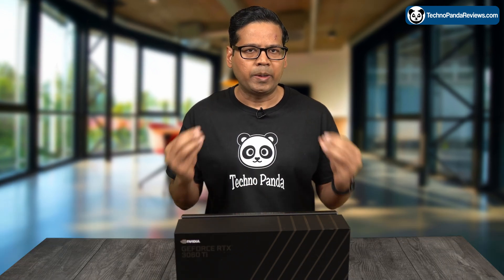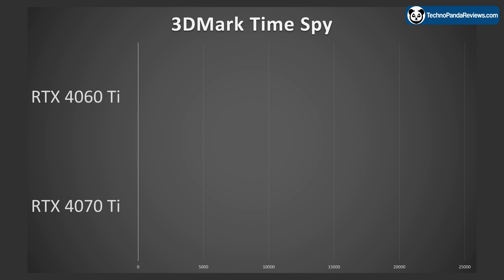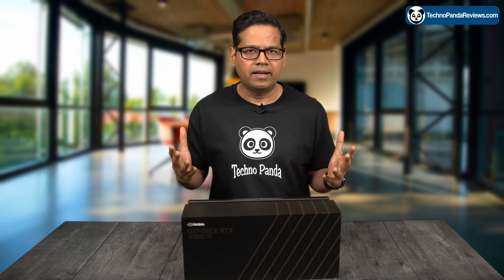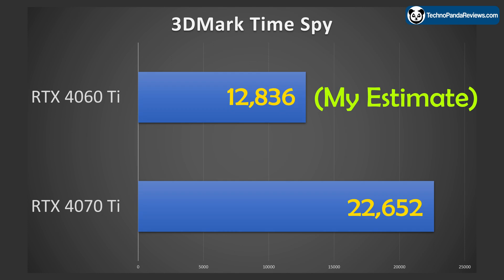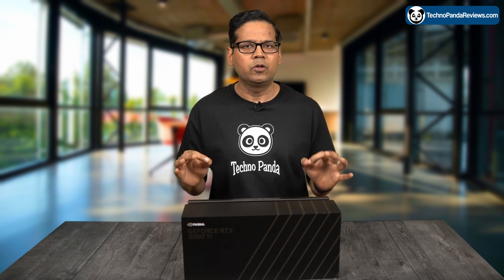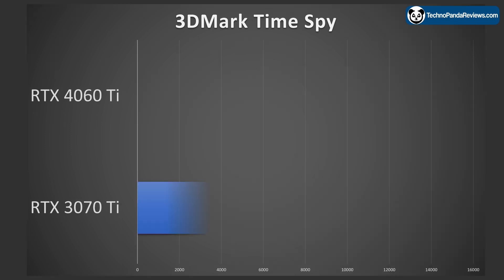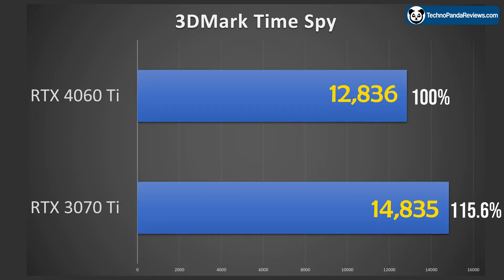Let's take a look at the 3DMark Time Spy benchmark score for the RTX 4070 Ti. This card is already out and we have definitive benchmarks — it's scoring 22,652 points. So if my analysis is correct, the RTX 4060 Ti should score around 12,836 points, which is basically 76.5% slower than the RTX 4070 Ti. For further context, the RTX 3070 Ti scores 14,835 points in the same benchmark, making it about 15% faster than the RTX 4060 Ti.